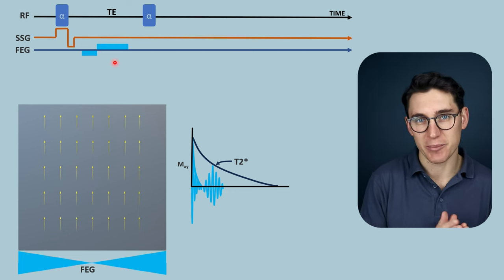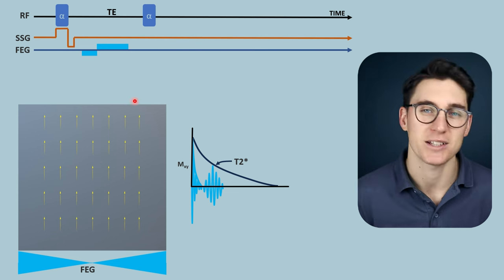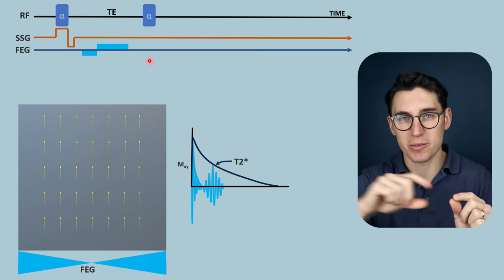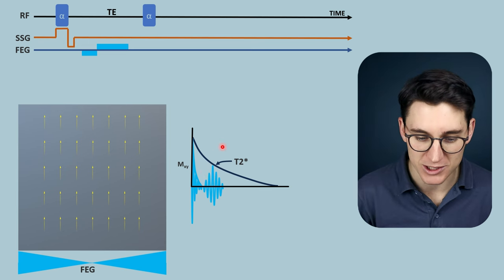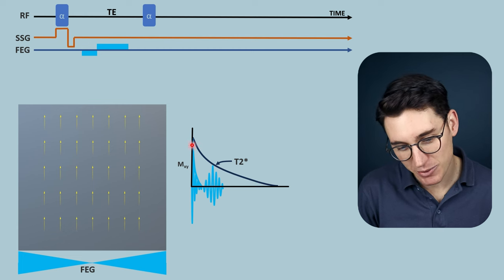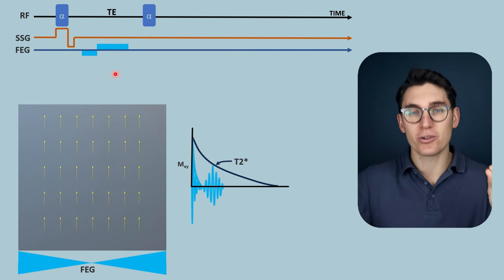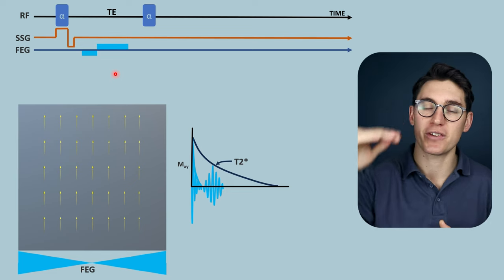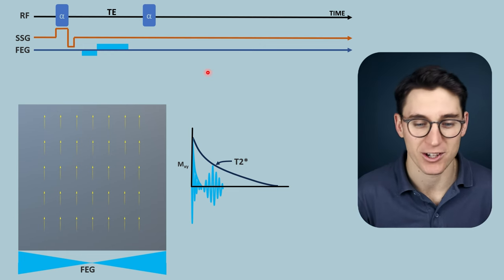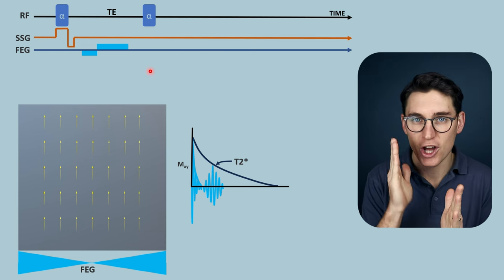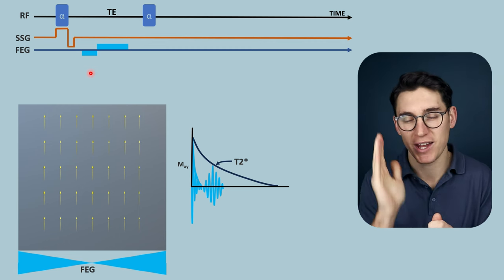In spin echo imaging we could fill up the TR time with multiple echoes or multi-slice imaging, but that isn't as available with gradient echo. Gradient echo images T2 star decay, which happens much quicker than T2 decay. In spin echo we get signal for a long period that we can sample repeatedly, filling k-space between the first and second RF pulses. That can't happen in gradient echo, meaning we need to bring the second RF pulse close to the first — making TR short. Short TR is one of the key features of gradient echo imaging.